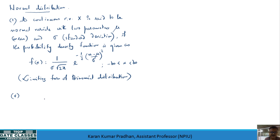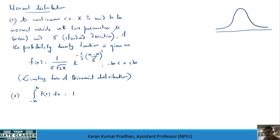From the property of the PDF, integrating from negative infinity to positive infinity for the given normal distribution with respect to x should give unity. The form of this distribution on the real line is bell-shaped, and the function attains its maximum at the mean mu.